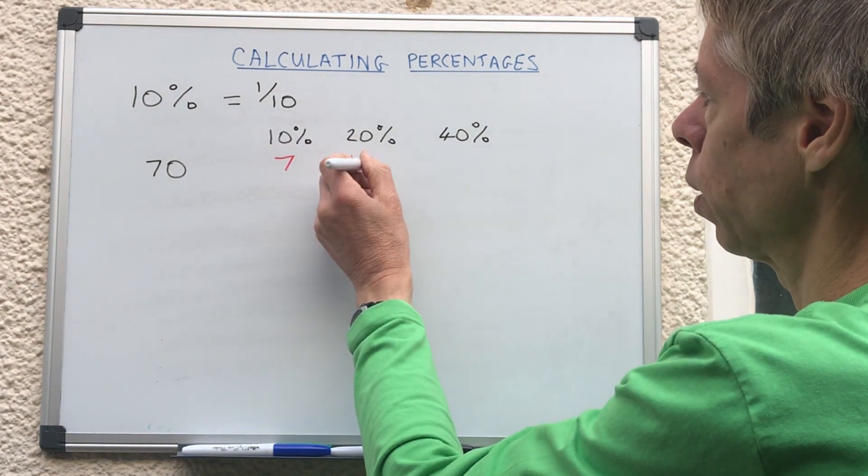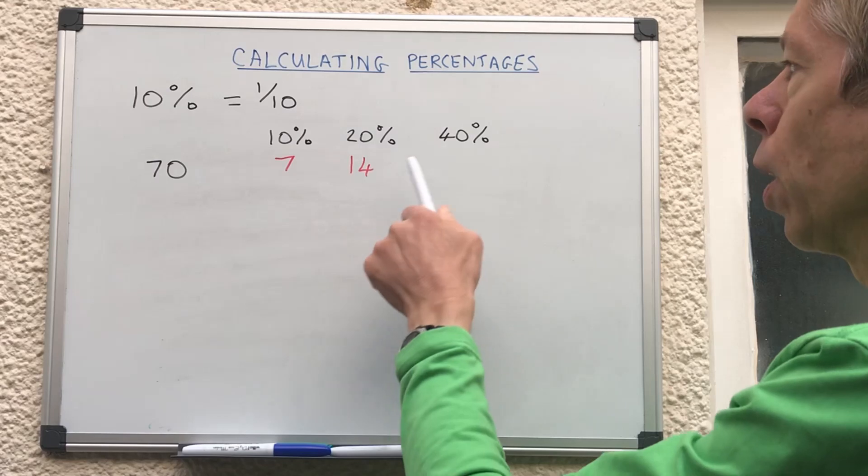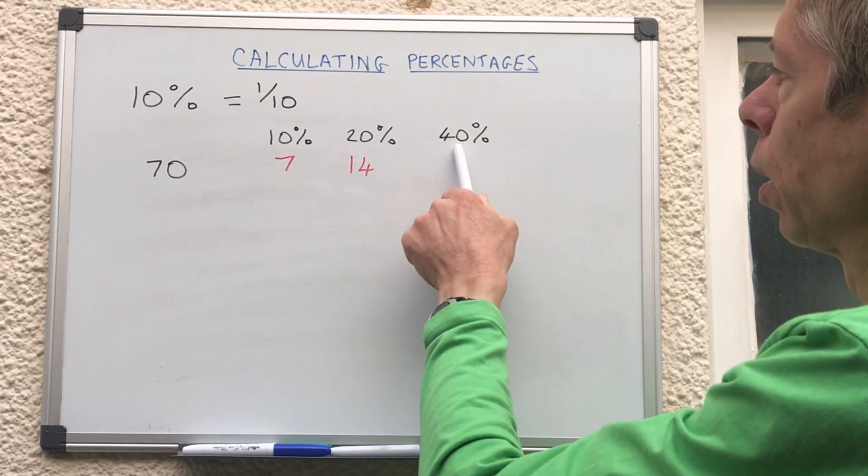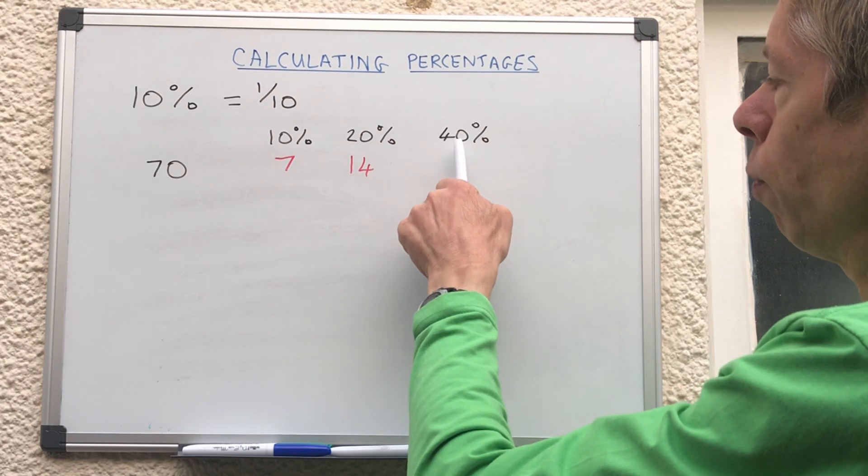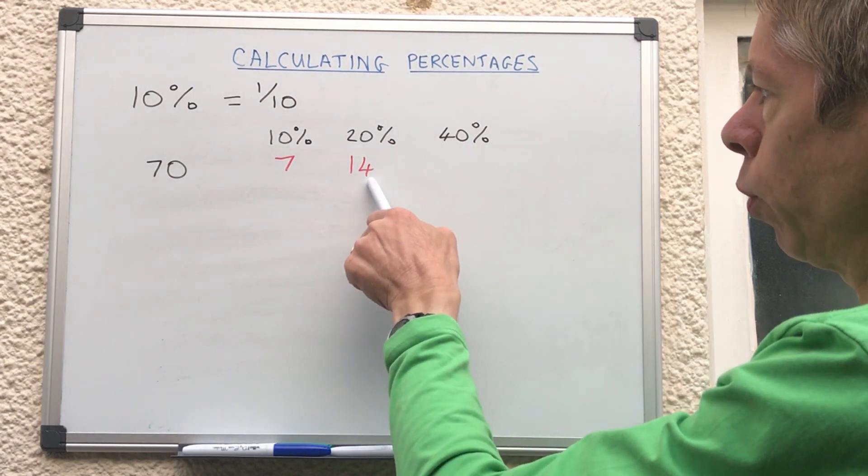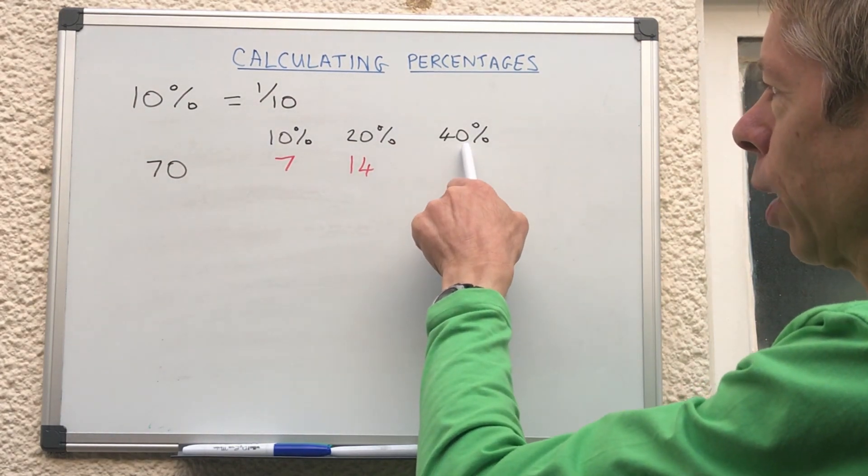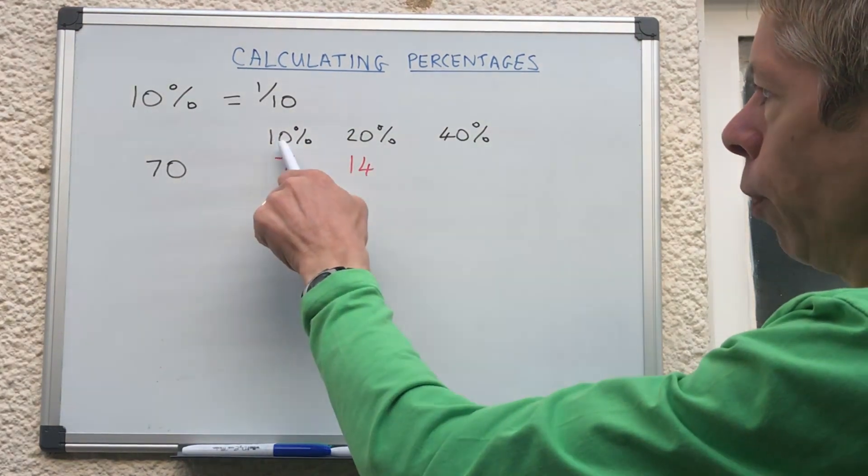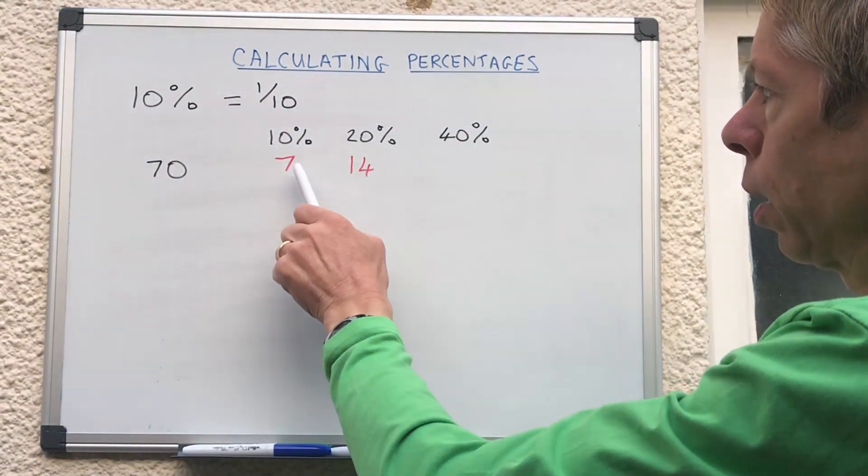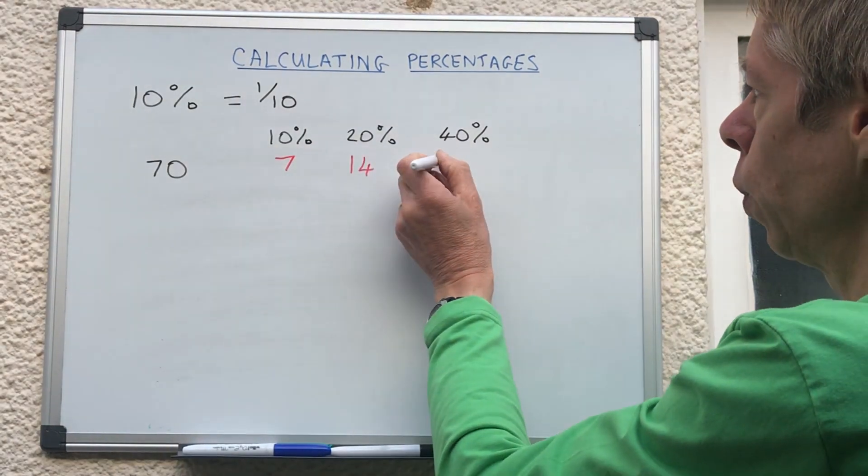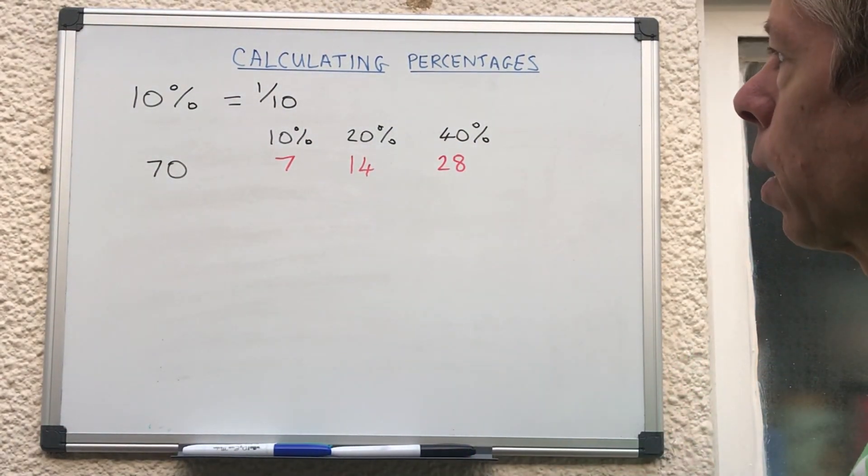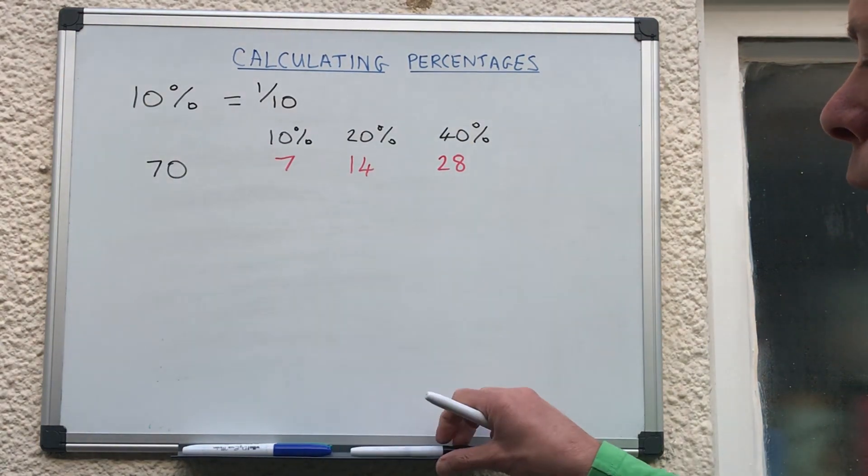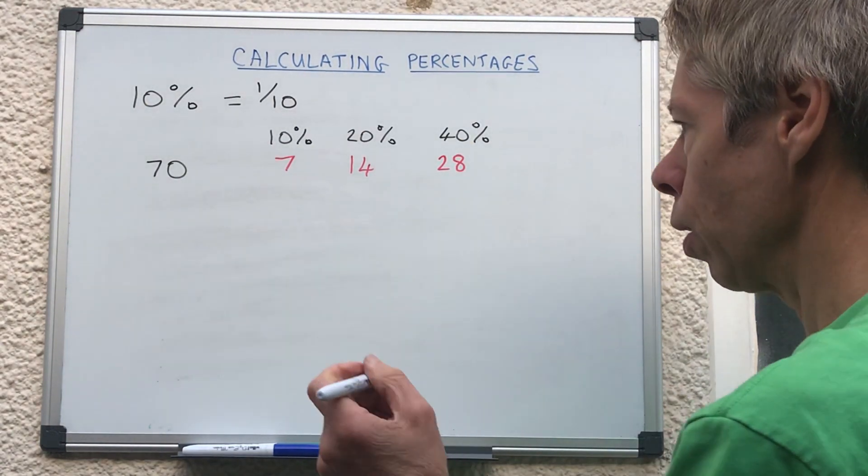If we want to know forty percent, it just so happens that forty is double twenty so we could double the fourteen, but it's not always going to be like that. So let's take it from the ten percent, we times that ten percent number by four. So seven times four is twenty eight. So that is ten percent, twenty percent, forty percent of seventy.